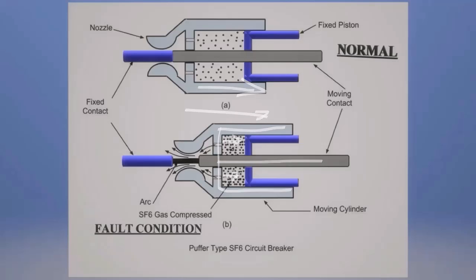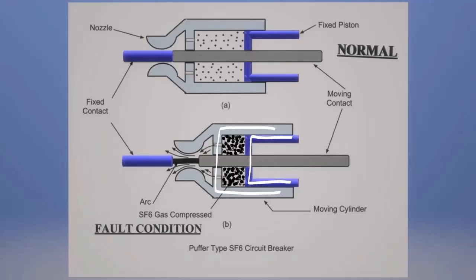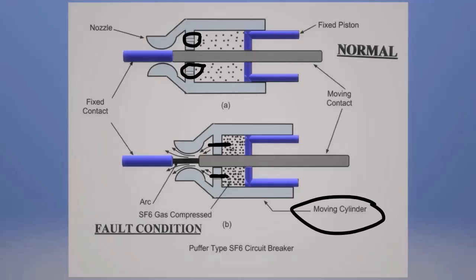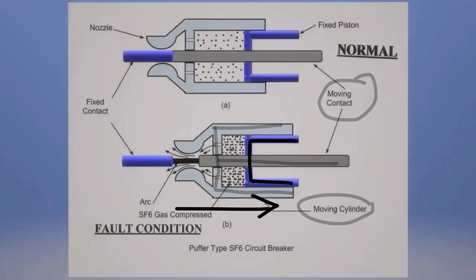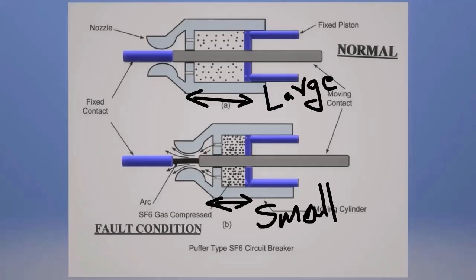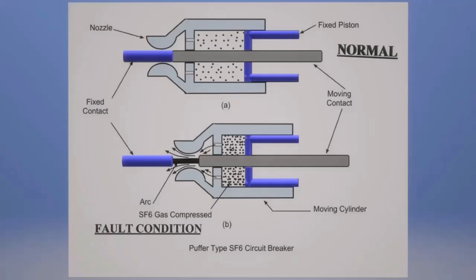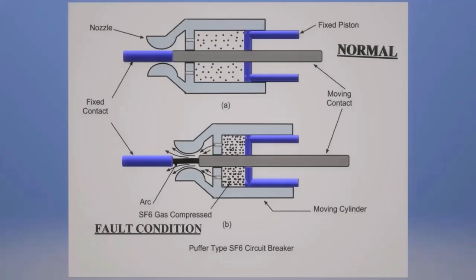The fixed position, moving cylinder, and fixed position SF6 gas compress. The moving cylinder moves, and the SF6 gas removes the arc. I can explain: the arc is created, and the moving cylinder and fixed position direction flow. The moving cylinder and fixed position distance is small, so the moving cylinder compresses the SF6 gas, and then the SF6 gas removes the arc.